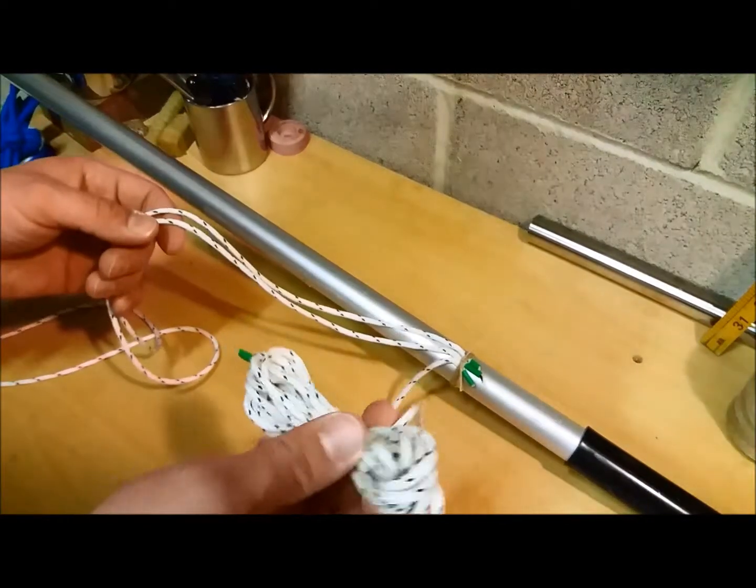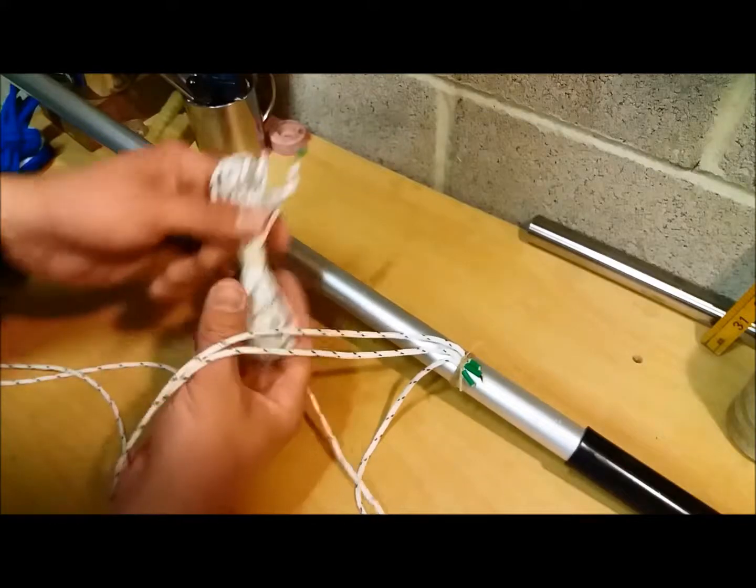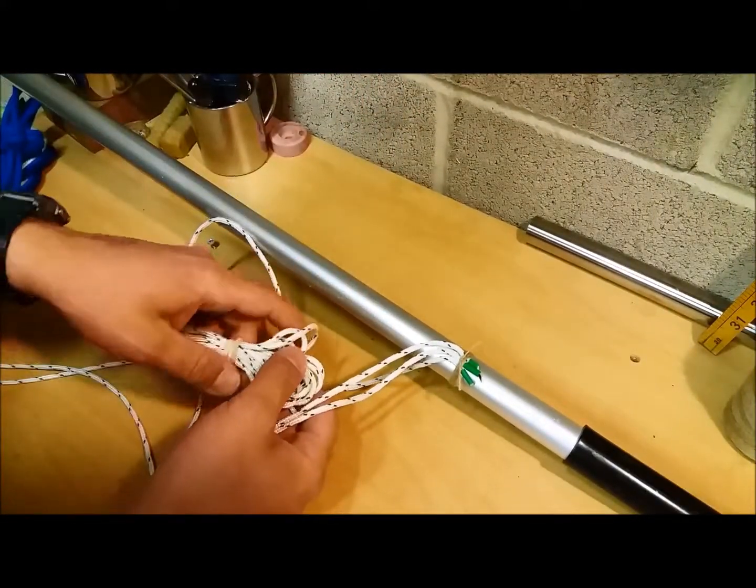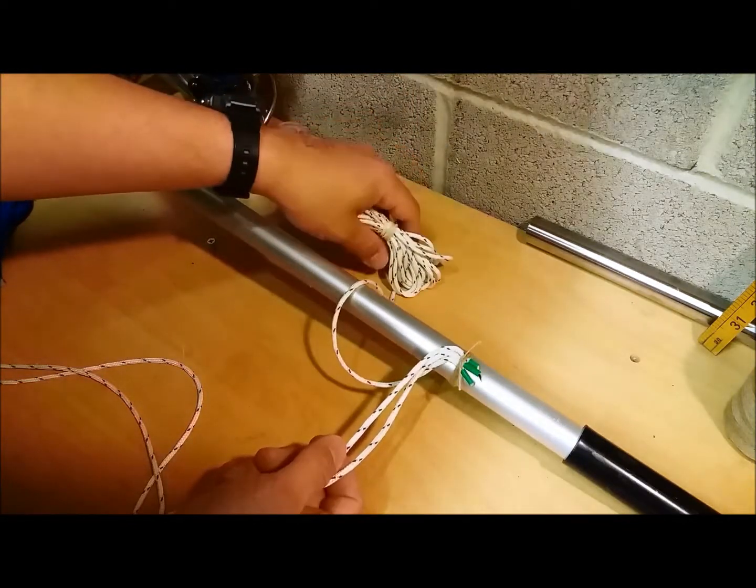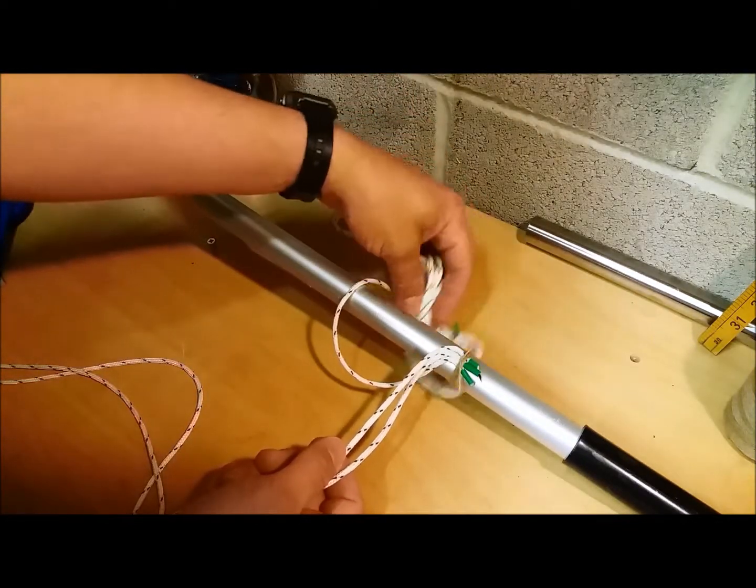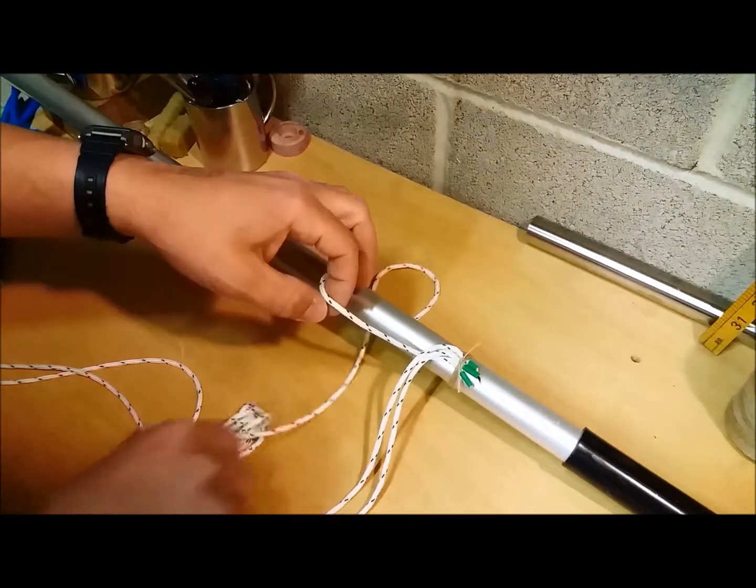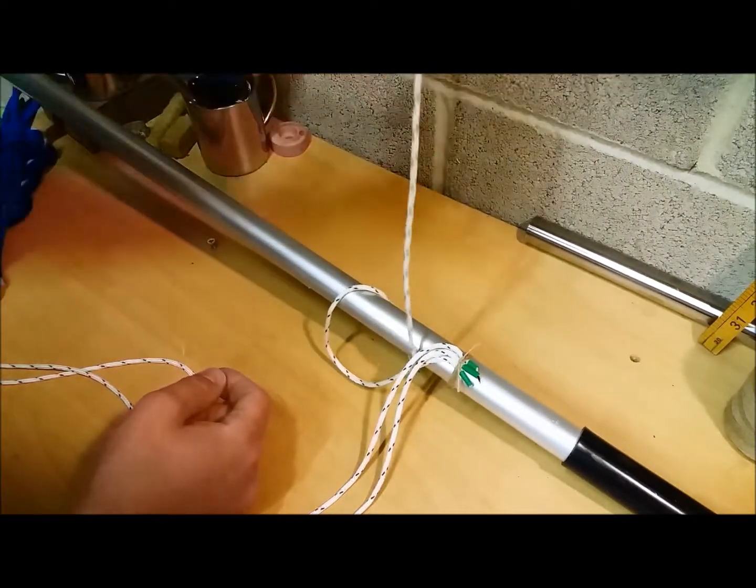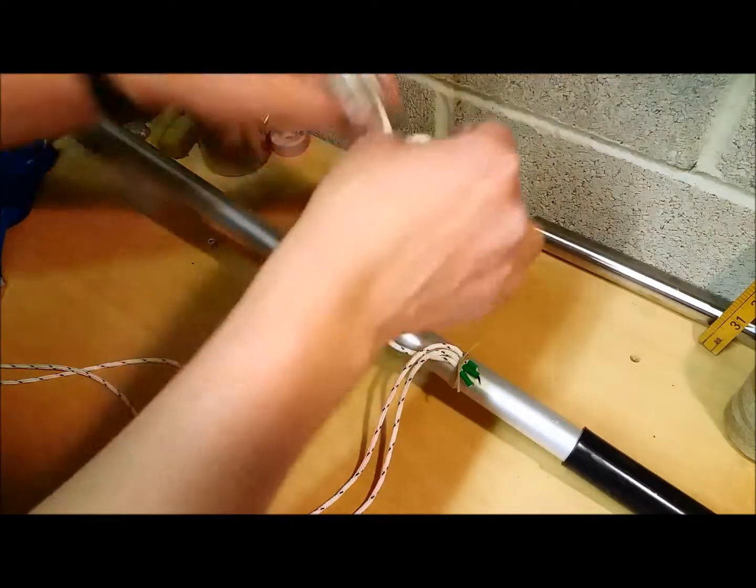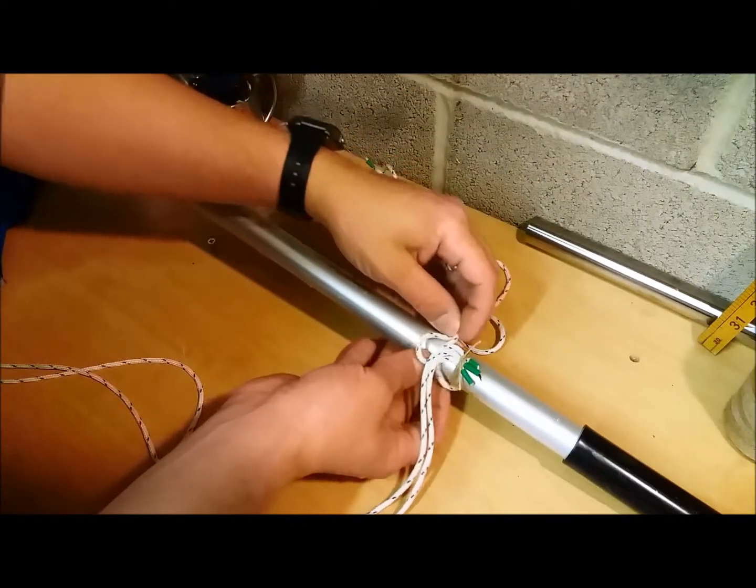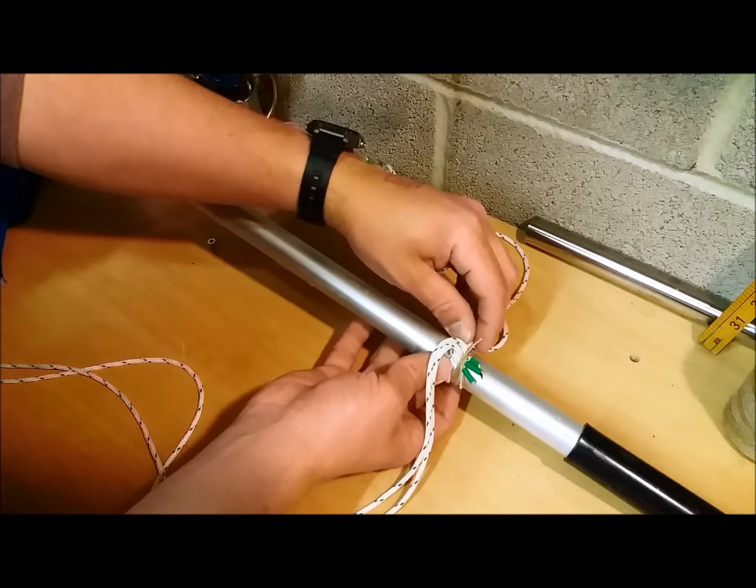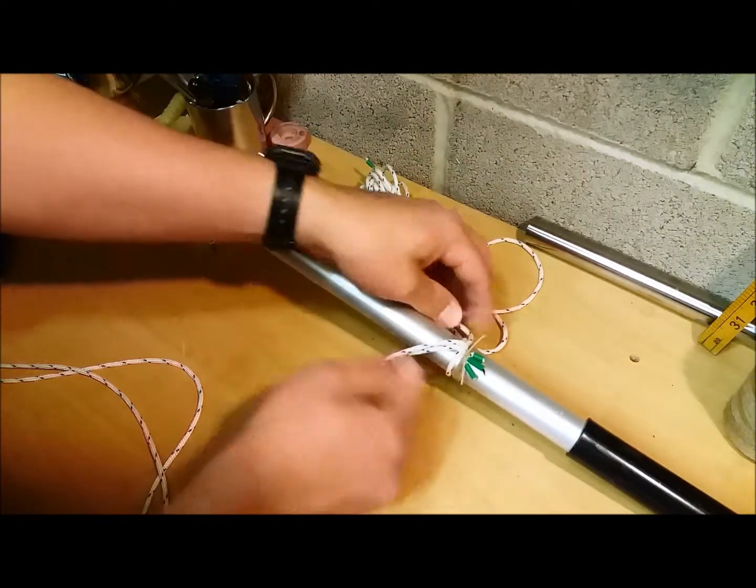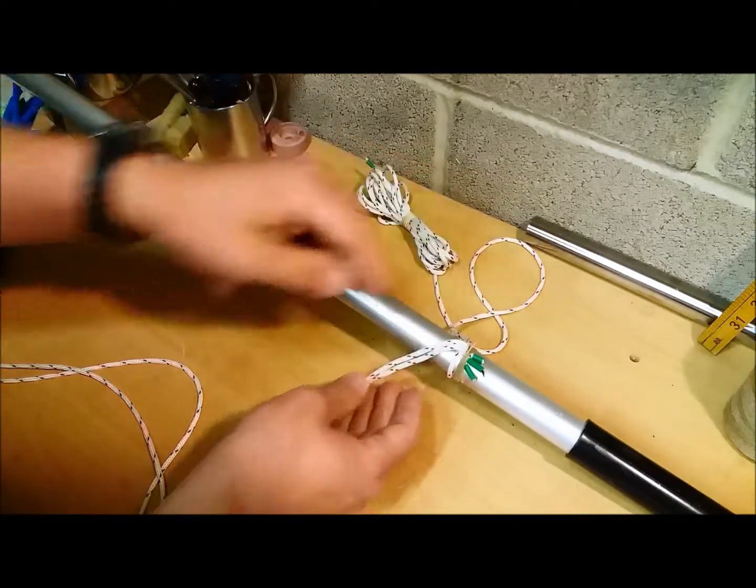First of all, take your first strand, pass it over, then back through. Just a little hitch. Then push it up, make it tight. Try and keep it on this side.